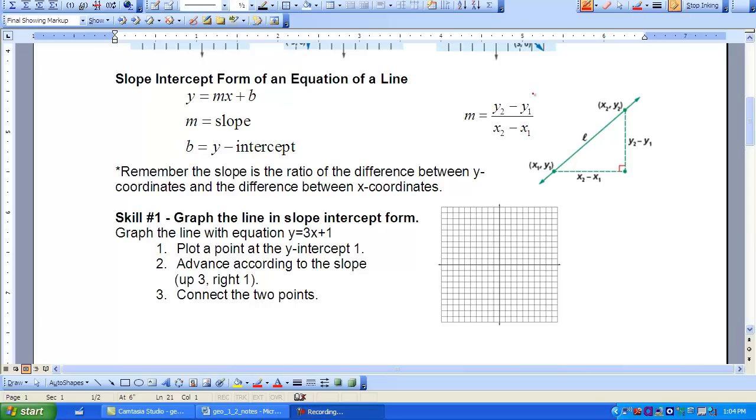Here you can see the formula for calculating the slope. That would be the change in Y. So you subtract your two Y values, Y sub 2 minus Y sub 1, and your change in X, so X sub 2 minus X sub 1. So remember, the slope is the ratio of the difference between your Y coordinates and the difference between your X coordinates.